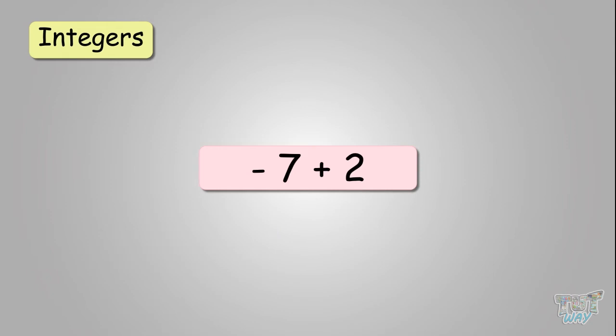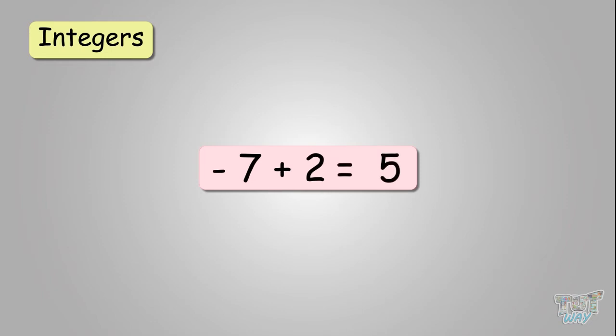Next: minus seven plus two. Again you have two opposite signs, so subtract. The answer will get the sign of the larger number, so it will be negative five.